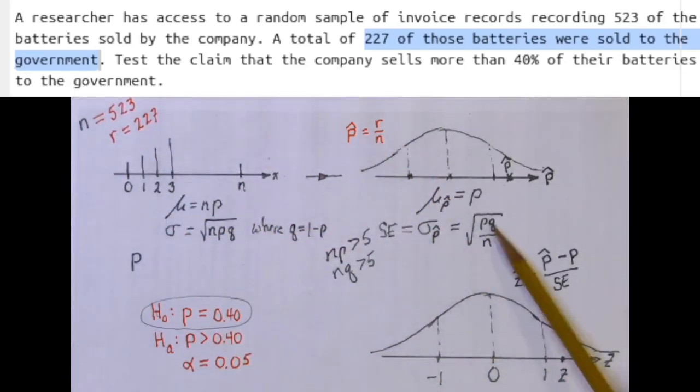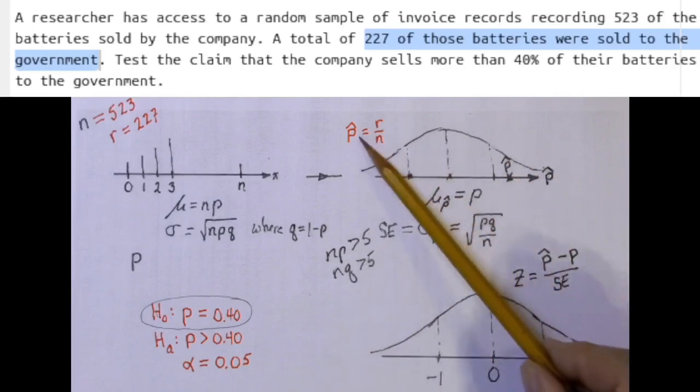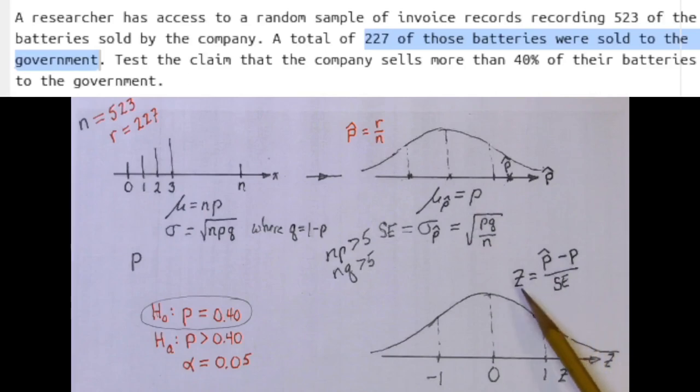So because we know what P and Q and N are, we can calculate the standard error, which is the standard deviation of the distribution of these sample proportions. We know what our P hat is, so we can calculate the test statistic. Because this is an upper-tailed test...